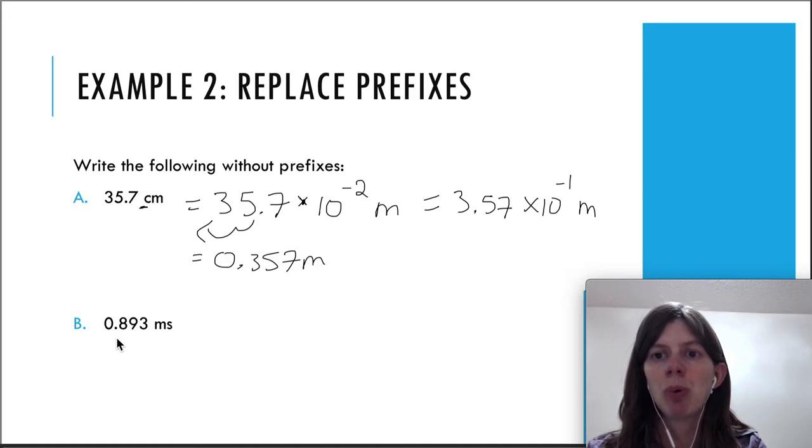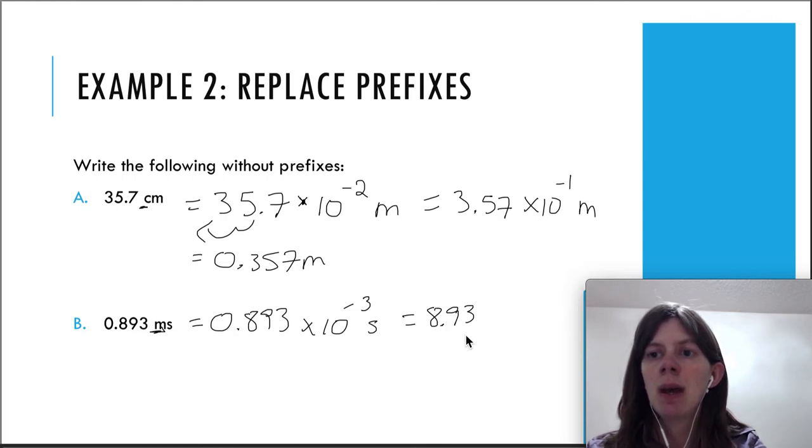Let's do one more here, 0.893 milliseconds. So milli stands for 10 to negative 3, so you replace that prefix with 10 to negative 3. We can write this in scientific notation by converting this to a number between 1 and 10, so we're going to write it as 8.93. And now instead of having to move the decimal 3 to the left, since we moved it one to the right, now we have to move the decimal 4 to the left. So times 10 to negative 4.